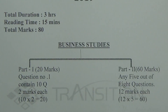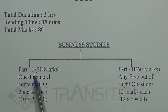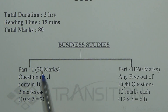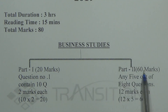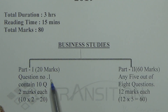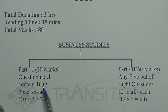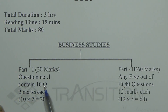This is the format of your Business Studies paper for 2019. As you can see, there are 2 parts: Part 1 and Part 2. Part 1 has a total of 20 marks and Part 2 has a total of 60 marks. Part 1 is question number 1, which contains 10 questions.